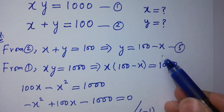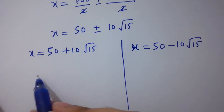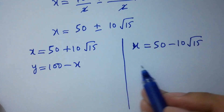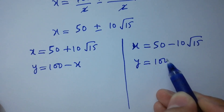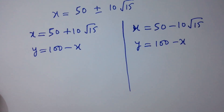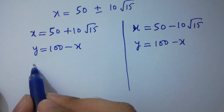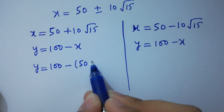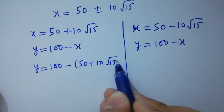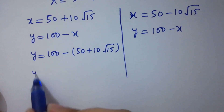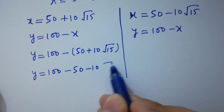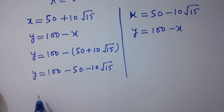Recalling y equals 100 minus x (the third equation), now finding y: when x equals 50 plus 10 root 15, y equals 100 minus (50 plus 10 root 15), which gives y equals 50 minus 10 root 15.